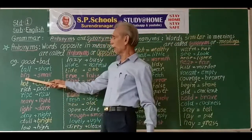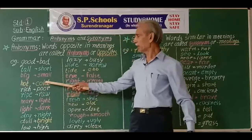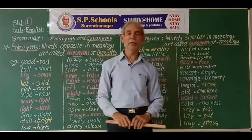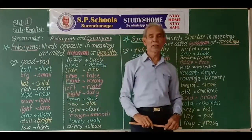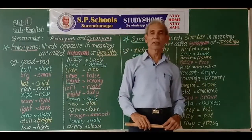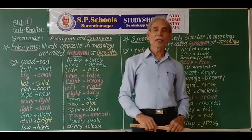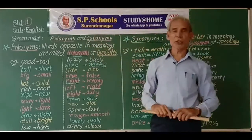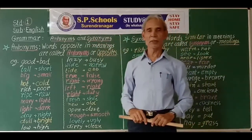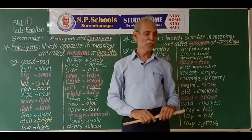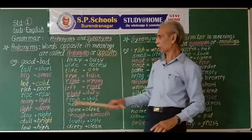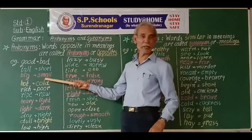Similarly, big and small are opposites. For example, it was a big house, versus a small house — small meaning not very big.